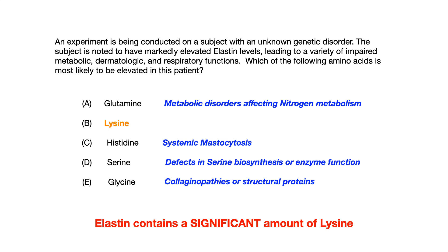And lastly, choice E, glycine — we see changes in glycine in collagenopathies or problems with structural proteins. Big takeaway from this question: lysine equals elastin. And a mnemonic I use is 'e-lysine' — elastin just kind of changed the second half of the word — so it's e-lysine, and you can associate elastin with lysine. I hope this is useful for you and gives you a free point on test day.